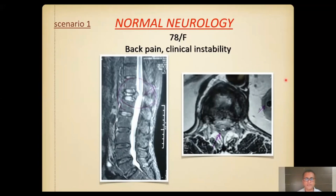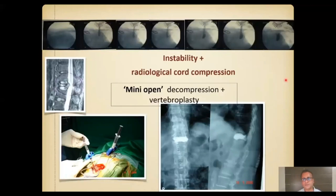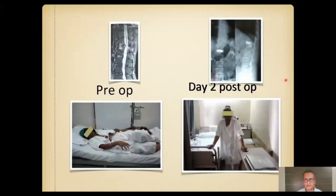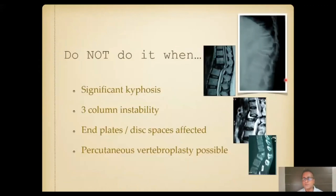In borderline cases where you feel hesitant to do a plain vertebroplasty alone, we devised a mini-open or minimally invasive decompression along with an open vertebroplasty. This negates the fear of the middle column being pushed onto the cord, and it gives good results. However, you must avoid this approach when there is significant kyphosis, as it simply cannot address a kyphosis deformity.